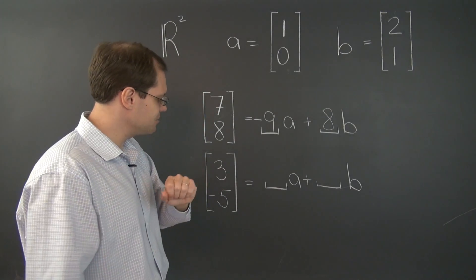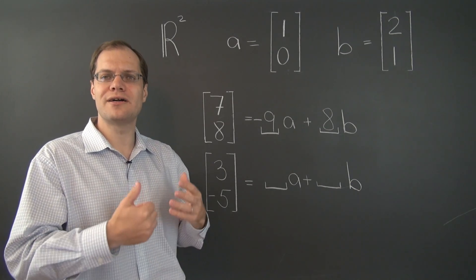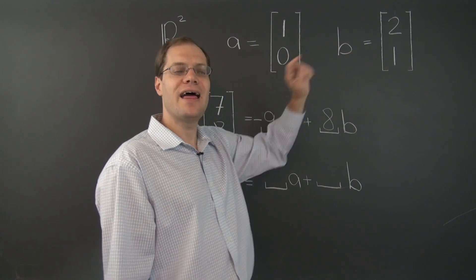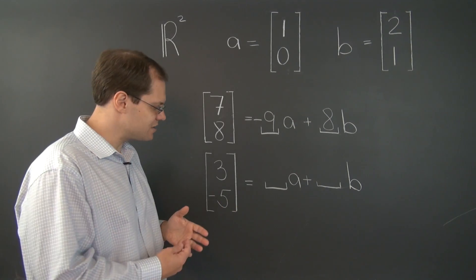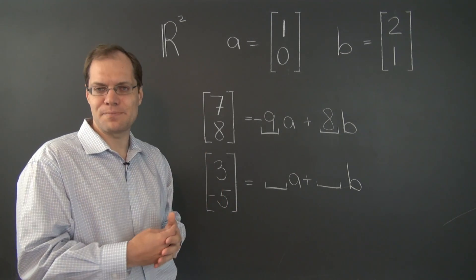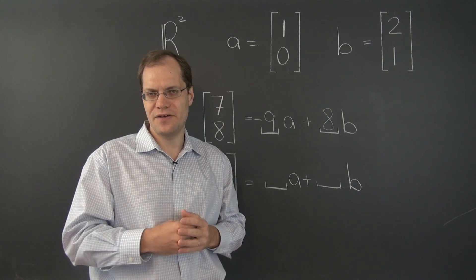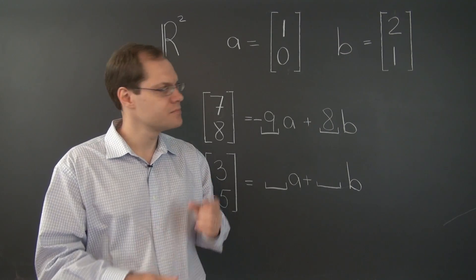Let's now do this problem just for practice. It will be exactly the same, because the order and the strategy is largely determined by the vectors A and B, and not by the vector that you're trying to represent. So the strategy and the order of steps will be exactly the same. You should probably pause the video, figure this out on your own, and then come back and check with us.